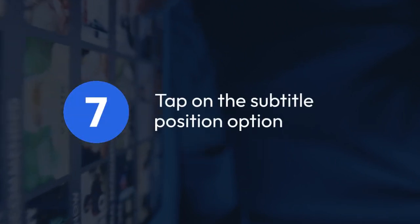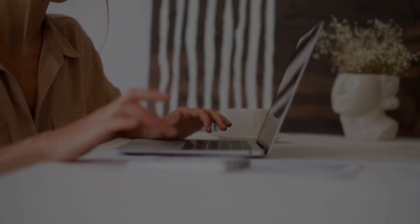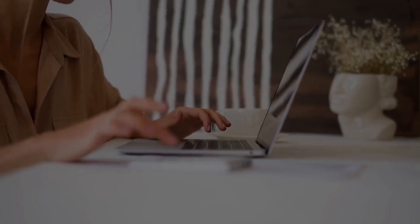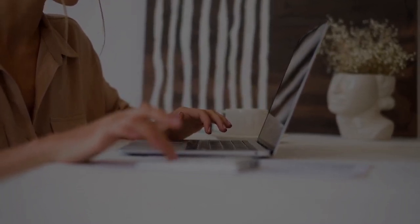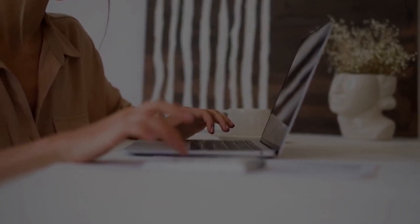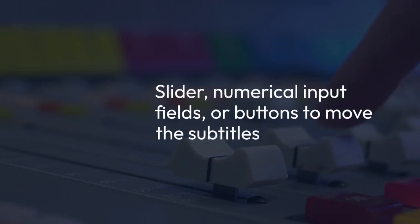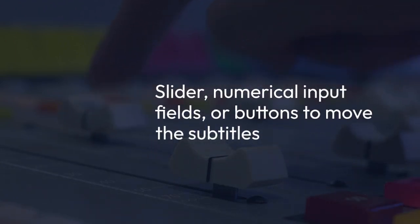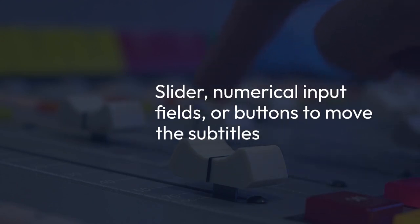Tap on the Subtitle Position option. You'll see a set of controls to adjust the vertical and sometimes the horizontal positioning. This may involve a slider, numerical input fields, or buttons to move the subtitles up, down, left, or right.